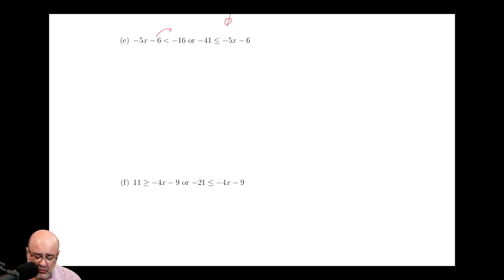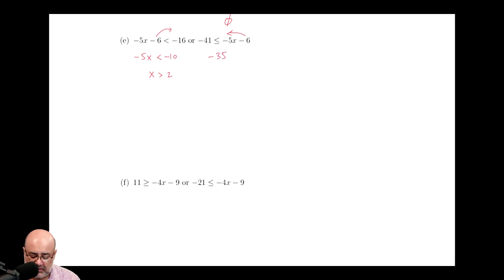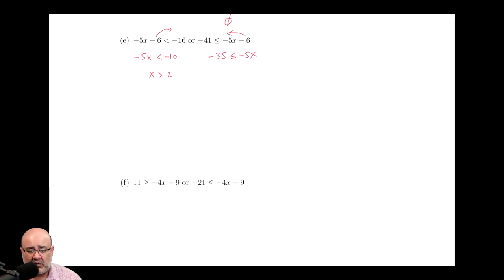Next one — same idea, isolate the x. Move the negative 6 over, and we get negative 5x is less than negative 10 (negative 16 plus 6 is negative 10). Divide both sides by negative 5 — because we're dividing by a negative, the inequality changes direction — and you get x is greater than 2. x is already on the left so I don't have to rearrange. For the other side, same idea: add the 6, which gives us negative 35 is less than or equal to negative 5x. To get x by itself, divide both sides by negative 5; since we're dividing by a negative, we must change the direction of the inequality. This gives us 7 is greater than or equal to x, which rearranges to x is less than or equal to 7.